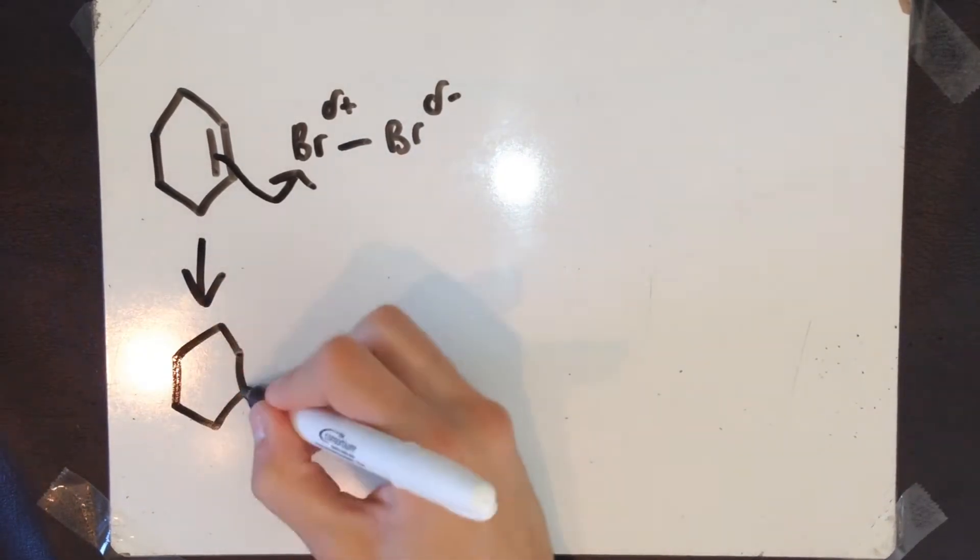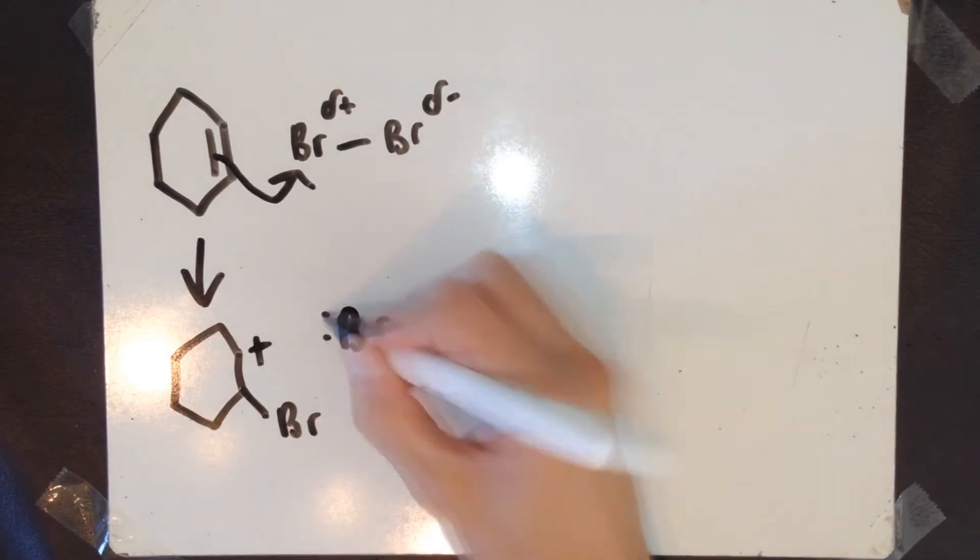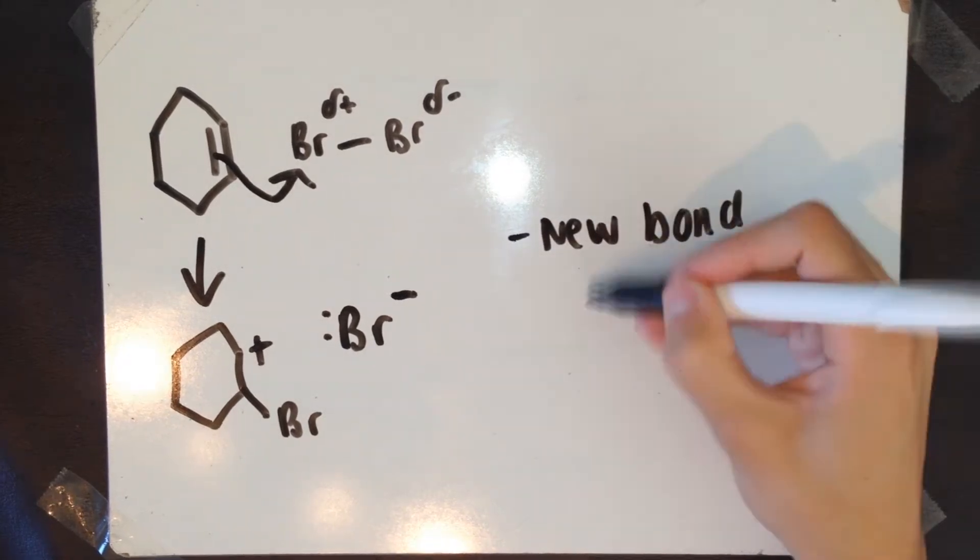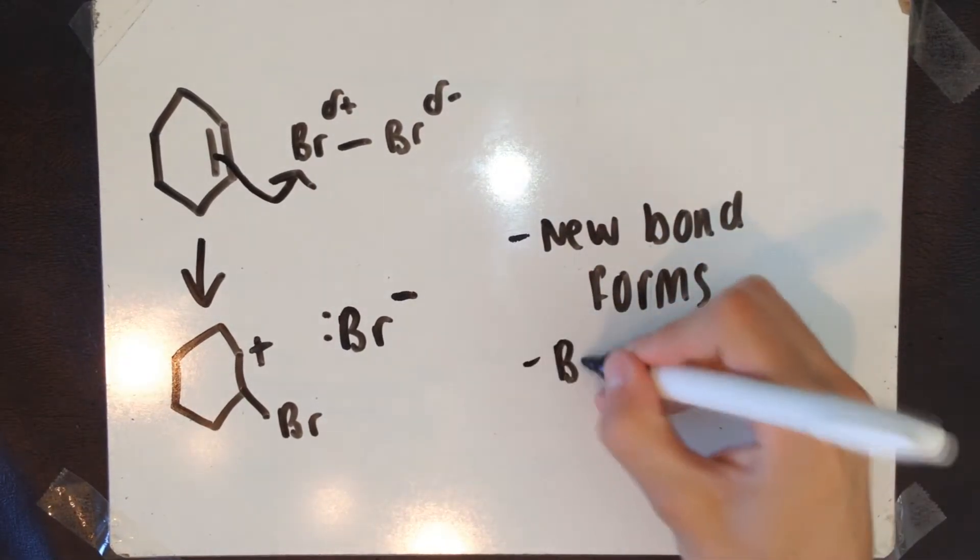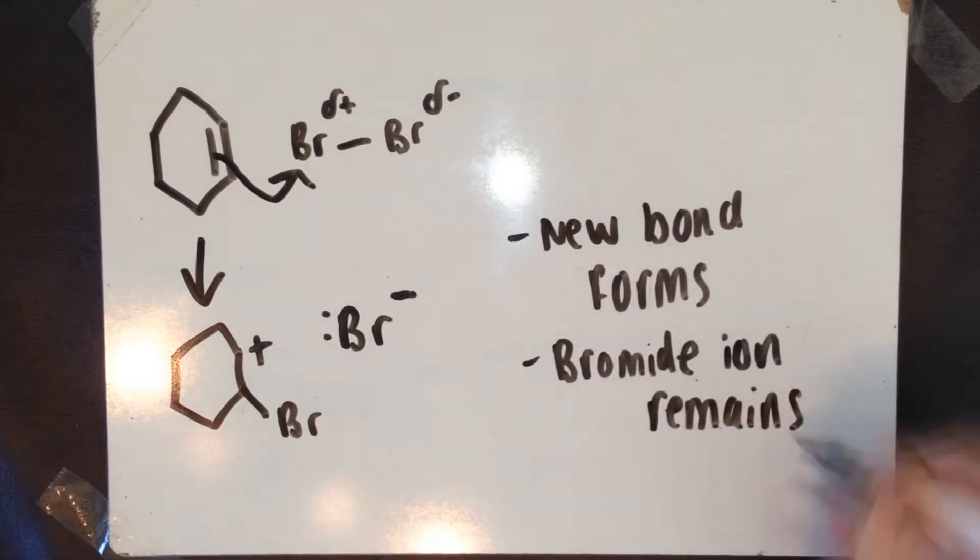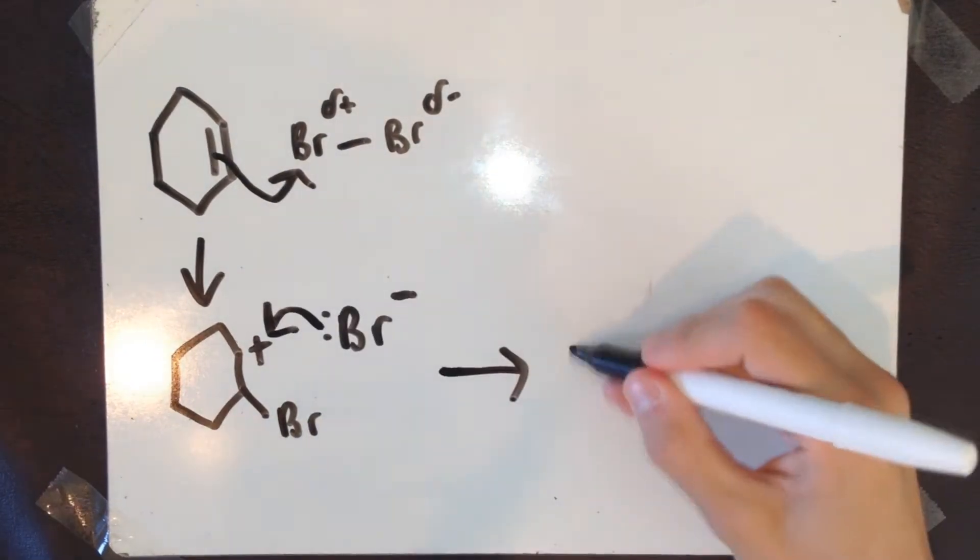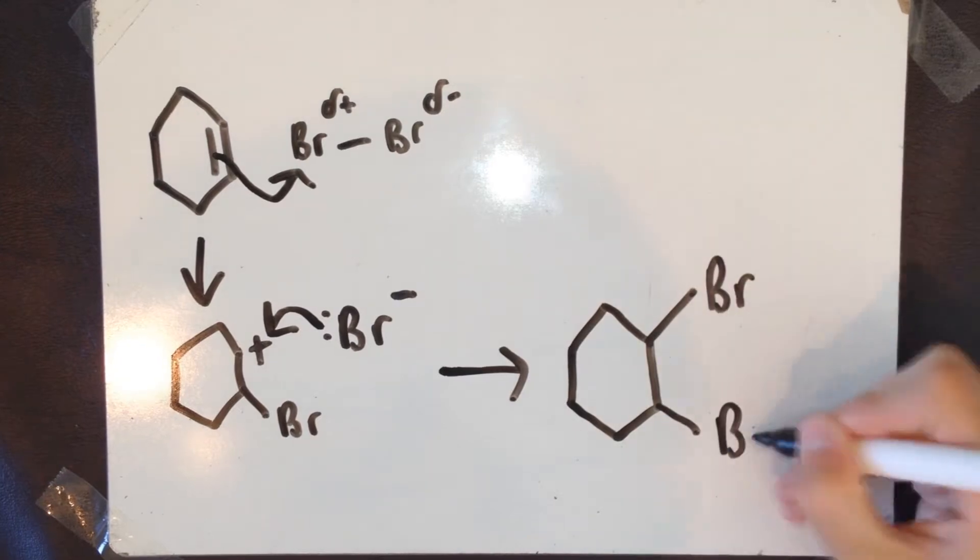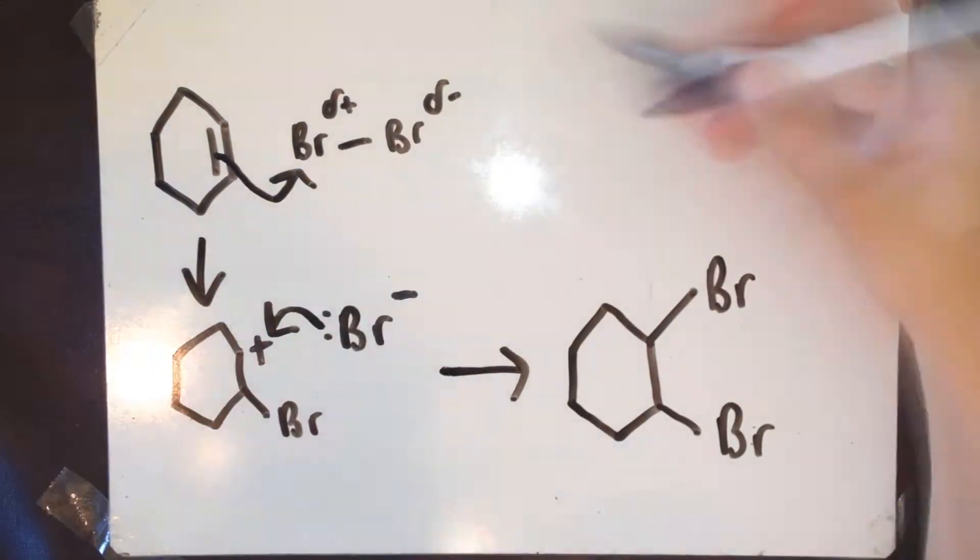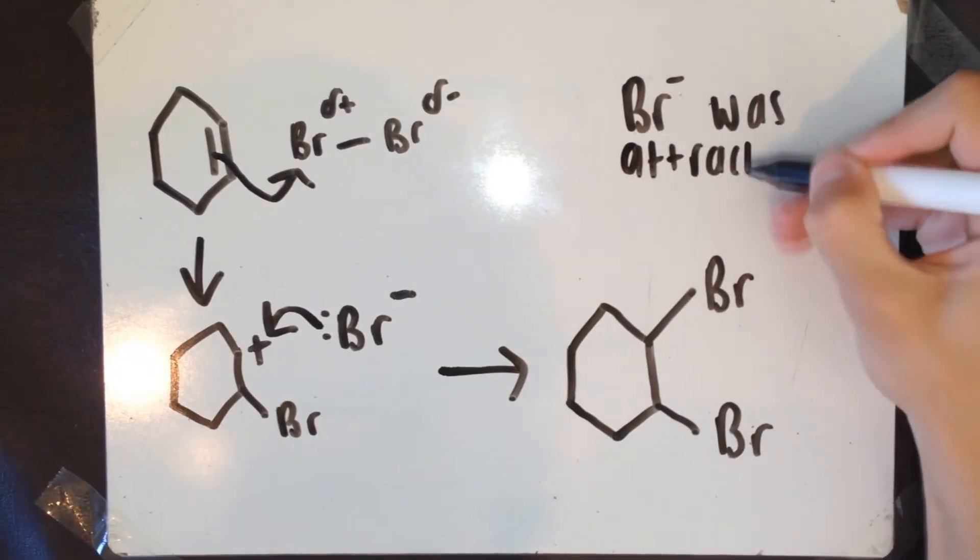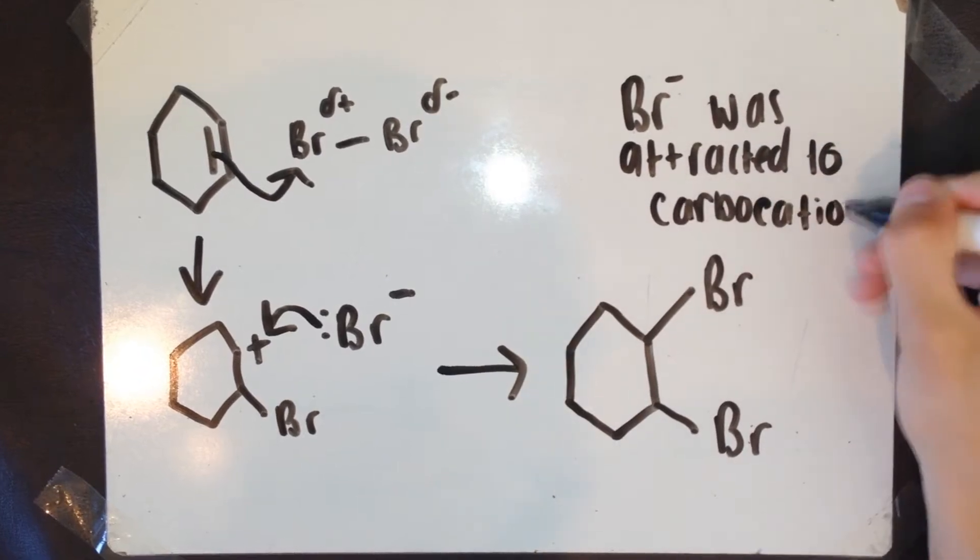Heterolytic fission occurs in the bromine molecule. A bromide ion is left on its own, and a new bond is formed between bromine and the carbocation. The bromide ion is attracted to the intermediate carbocation, forming the new covalent bond. The final product, 1,2-dibromocyclohexane, is formed.